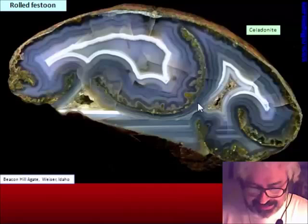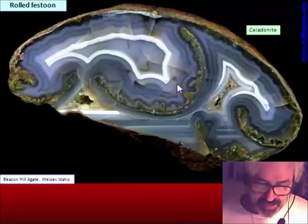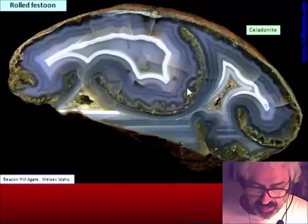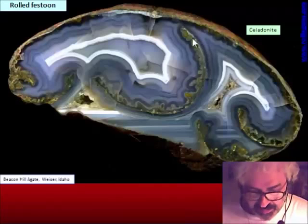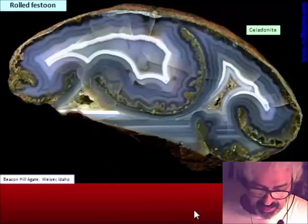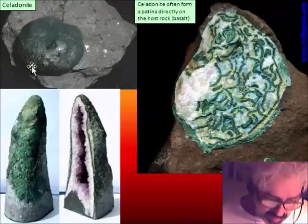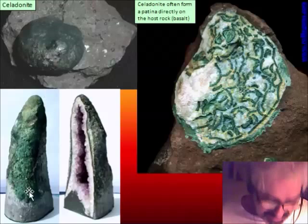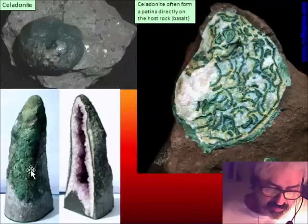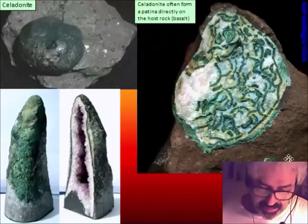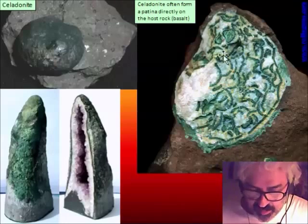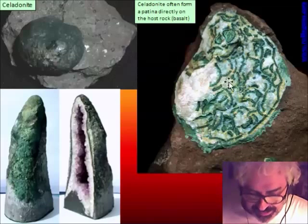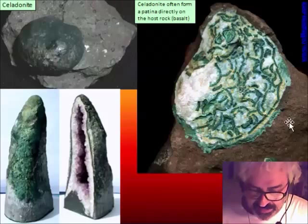The celadonite falls like a whole piece. This is a case where the celadonite falls down, but in many cases it stays around the nodule, giving a coating skin of green color. So this is the green skin of all the amethyst geode.